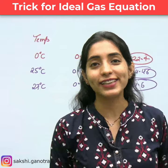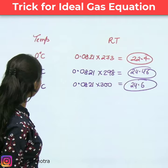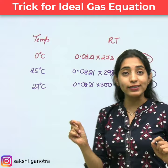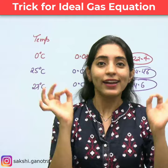Generally, in our exam, there are three temperatures: one is 0 degree C, one is 25, and one is 27. So, for these three, the corresponding RT values directly are: 0°C gives 22.4, 25°C gives 24.46, and 27°C gives 24.6. Don't calculate the values — use these directly and you will save a lot of time.